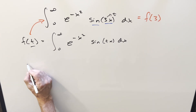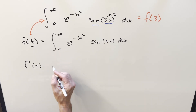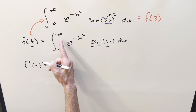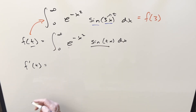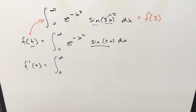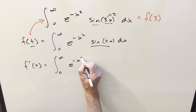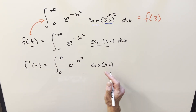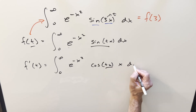For Feynman's trick, we want to differentiate f(t). We don't have any worries about convergence because sine is between minus 1 and 1, and e to the minus x squared quickly goes to 0, and there's no problem at 0 either. So we go ahead and differentiate with respect to t. The e to the minus x squared is just a constant with respect to t, so we bring that down. The derivative of sine tx gives cosine tx, and by the chain rule an x pops out, giving us x dx.